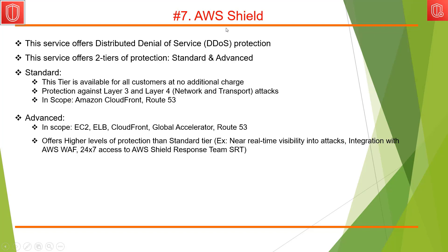The next service is Shield. WAF and Shield go hand in hand. Shield offers DDoS — distributed denial of service — protection. This service offers two tiers of protection: Standard and Advanced. Standard is available for all customers at no additional charge and protects against Layer 3 (network) and Layer 4 (transport) attacks. Advanced offers Standard plus higher-level protection such as near real-time visibility into attacks, integration with AWS WAF, and access to a 24x7 AWS Shield Response Team.